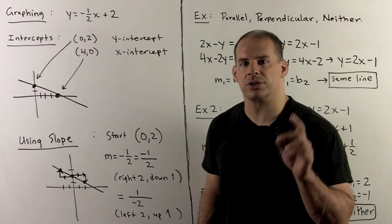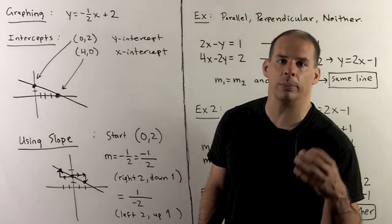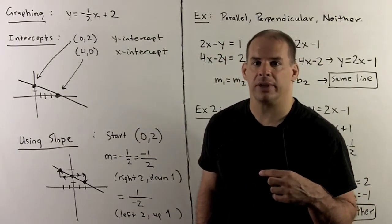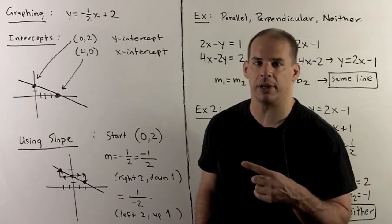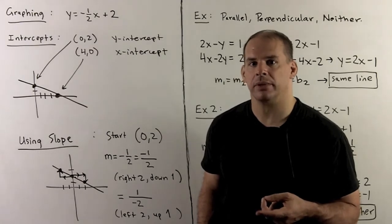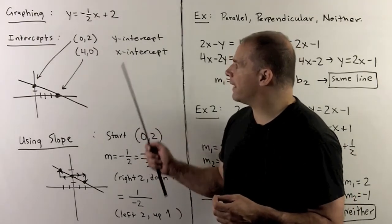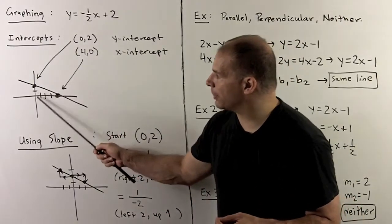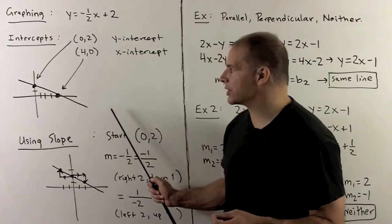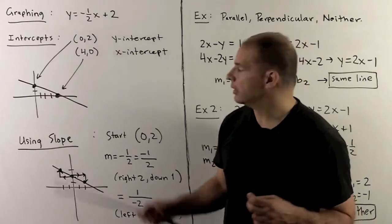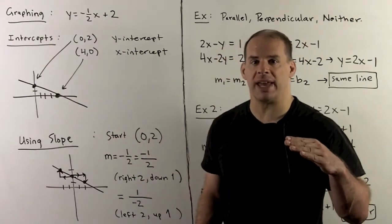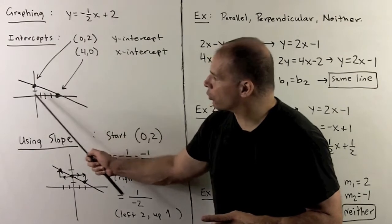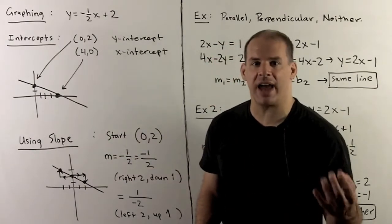Let's recall how to graph a line using the slope and a given point — in this case the y-intercept. The usual procedure: find any two points, stick two x-values into the equation, plot the points, and connect the dots. We've already found the x and y-intercepts: (0, 2) and (4, 0). We plot those and connect. Checking the slope: the inclination is negative, so slope is negative. The rise is 2 and the run is 4, giving minus 2 over 4, or minus one-half, which checks our work.